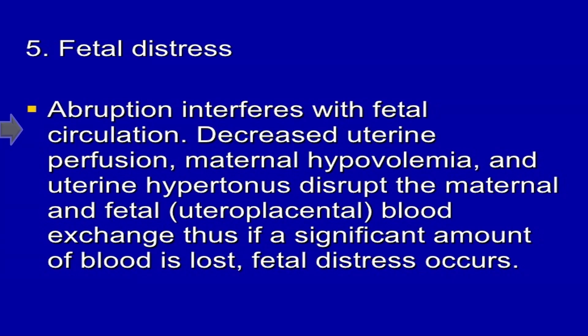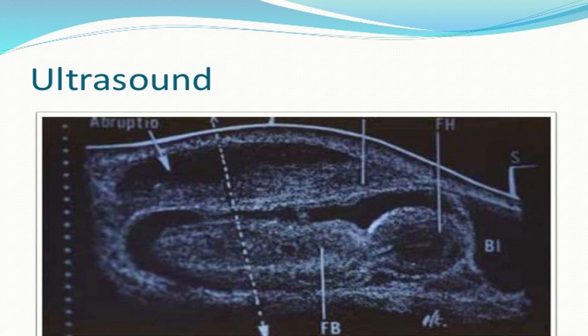There is fetal distress in abruptive placenta because abruption interferes with fetal circulation. Decreased uterine perfusion, maternal hypovolemia, and uterine hypertonus disrupt the maternal and fetal blood exchange. Thus, if a significant amount of blood is lost, fetal distress occurs.